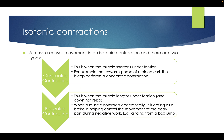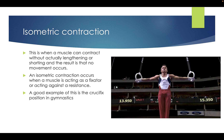Isotonic contractions cause movement and have two types. Concentric contraction — when the muscle shortens under tension; for example, the upward phase of a bicep curl. Eccentric contraction — when the muscle lengthens under tension; when a muscle contracts eccentrically it acts as a brake to help control the movement of the body part, performing negative work, e.g. landing from a box jump. Isometric contraction — when a muscle contracts without lengthening or shortening, resulting in no movement; this occurs when the muscle acts as a fixator or against resistance, e.g. the crucifix position in gymnastics.